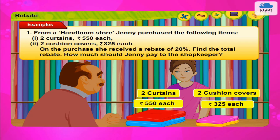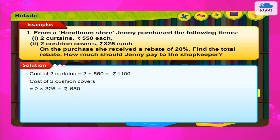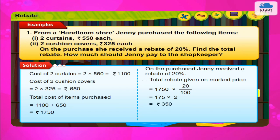Example 1: Jenny purchased 2 curtains at Rs. 550 each and 2 cushion covers at Rs. 325 each. On the purchase, she received a rebate of 20%. Find the total rebate and how much Jenny should pay to the shopkeeper. Solution: Cost of 2 curtains = 2 × 550 = Rs. 1,100. Cost of 2 cushion covers = 2 × 325 = Rs. 650. Total cost = Rs. 1,100 + 650 = Rs. 1,750. Total rebate = 1,750 × 20 upon 100 = Rs. 350. Therefore, Jenny has to pay Rs. 1,750 − 350 = Rs. 1,400.